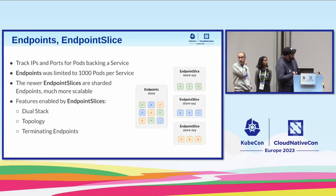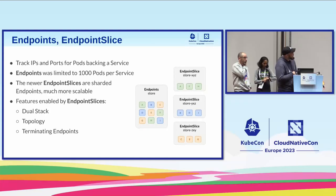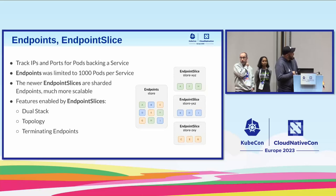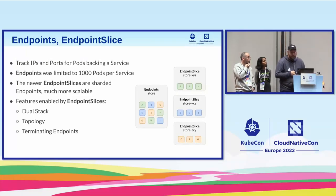Endpoints track IPs and ports for pods. We used to have endpoints, which had some limitations — you could only get up to 1,000 pods per service. More recently, we have endpoint slices, which is its successor. It shards the endpoints and is much more scalable. Endpoint slices also allowed us to do things in dual stack, topology, and terminating endpoints.